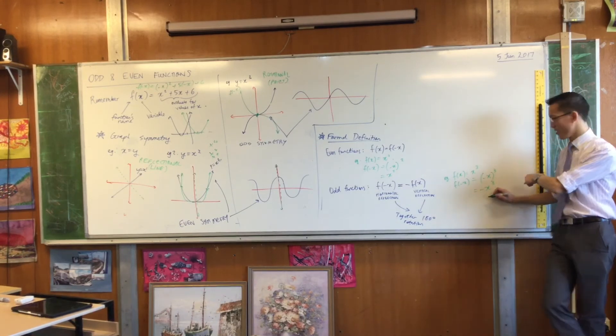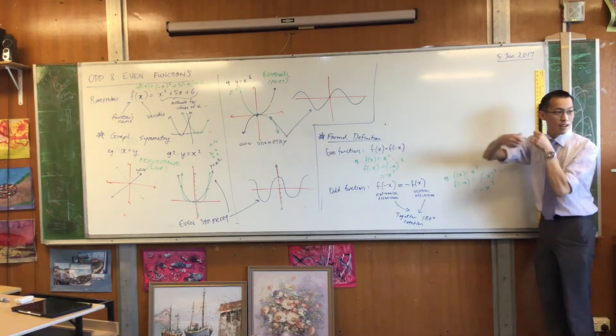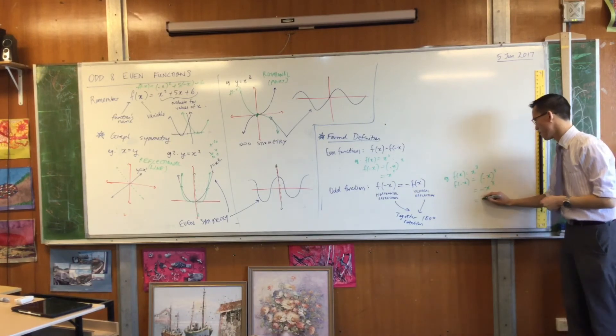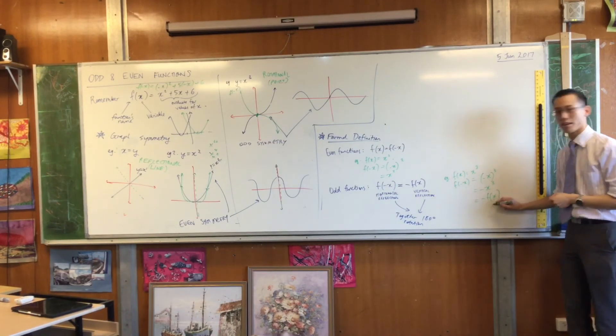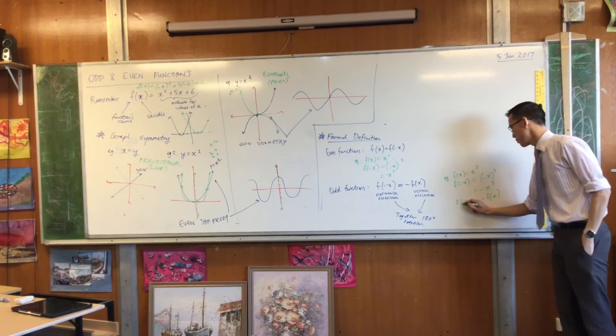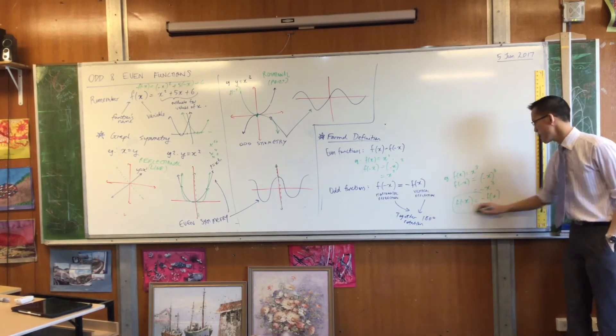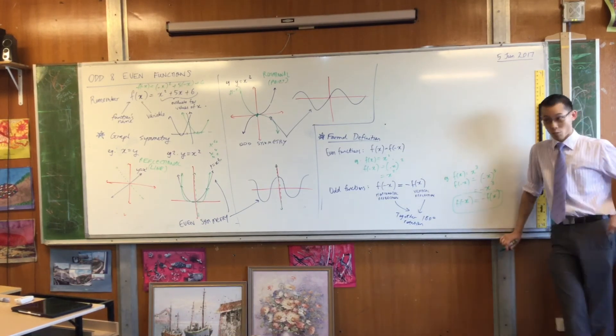But look at this guy. By definition, that's a vertical flip, isn't it? That's negative f of x. So this means it's an odd function once we've ended there. Does that make sense?